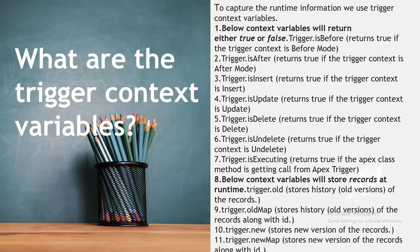The following context variables store records at runtime: trigger.old stores the old version of the records; trigger.oldMap stores the old versions of the records along with their IDs; trigger.new stores the new version of the records; trigger.newMap stores the new version of the records along with their IDs.